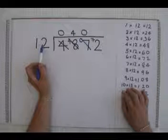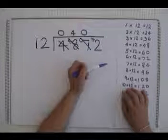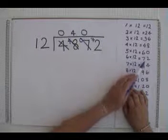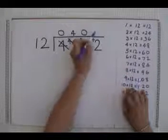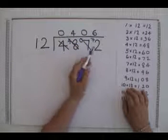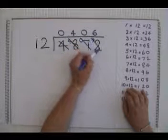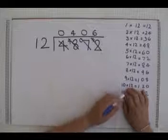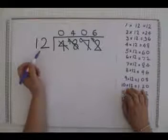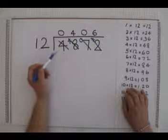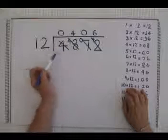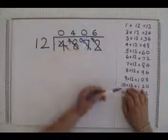Finally we ask, how many times does 12 fit into 72? Again, referring to our times table we will see that 6 times 12 is 72. We write the answer of 6 up here and as 6 times 12 is 72 there is nothing left to carry over and therefore your sum is finished. So the answer of how many times can you fit 12 into 4872 is 406 times.